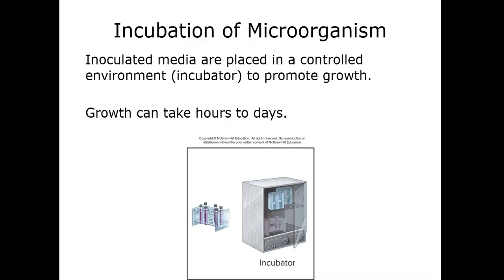E. coli has a generation time of about 37 minutes, so overnight you could get a sample with several million cells. Mycobacterium, which causes tuberculosis, grows incredibly slowly due to its waxy outer lipid coating, taking several days to reach high numbers. The type of microbe determines how long it takes to grow.